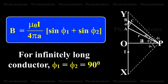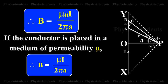For an infinitely long conductor, φ1 equals φ2 equals 90 degrees. Therefore, B equals μ0 times I by 2πA.